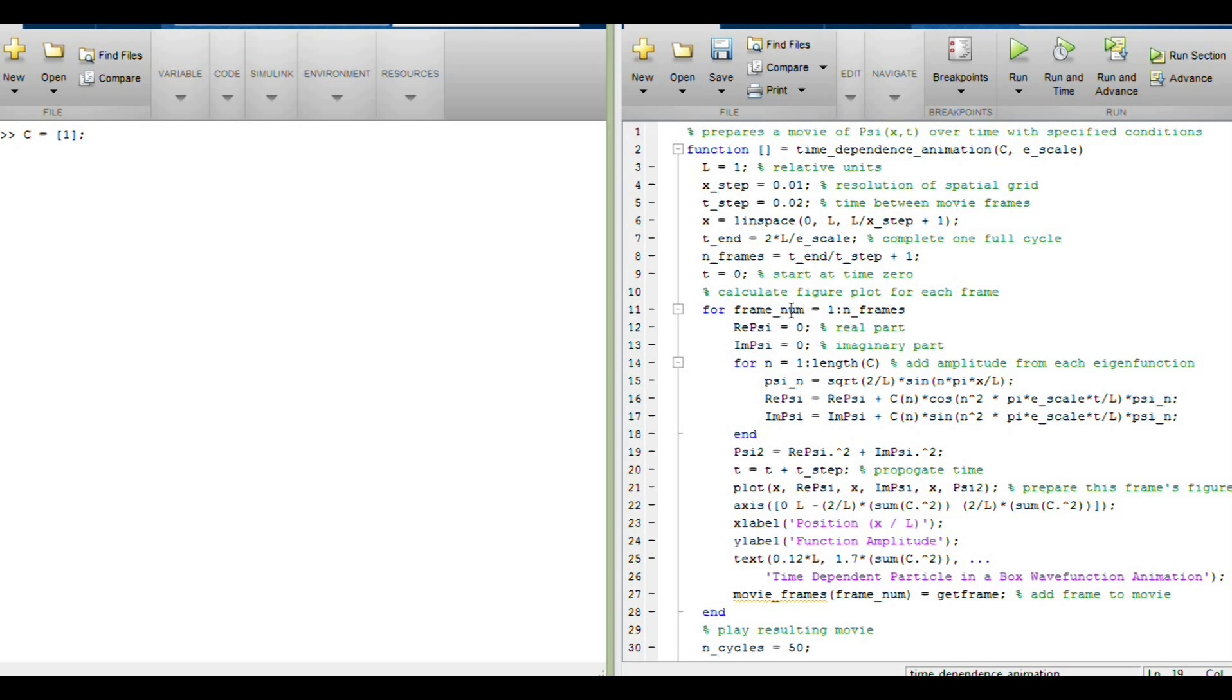Basically for each of those individual components, each of those individual eigenfunctions, it's going to calculate the spatial wave function, then tack on the time part to produce an imaginary and a real part of the wave function. So for that complex exponential, we can calculate what the real part of that is and what the imaginary part of it is. The real going to be some cosine function, the imaginary going to be some sine function.